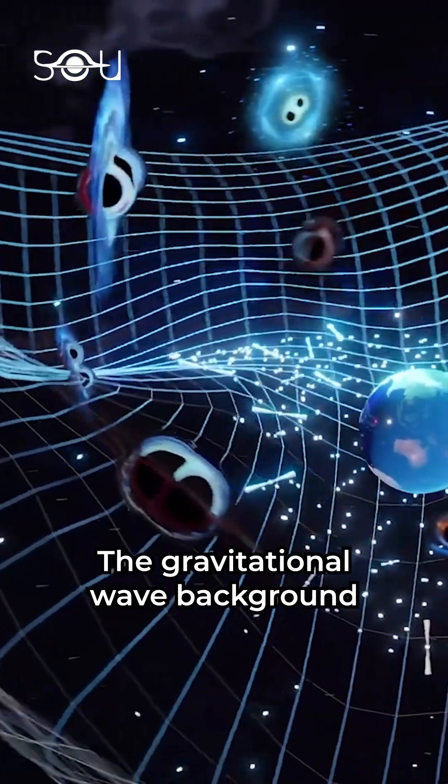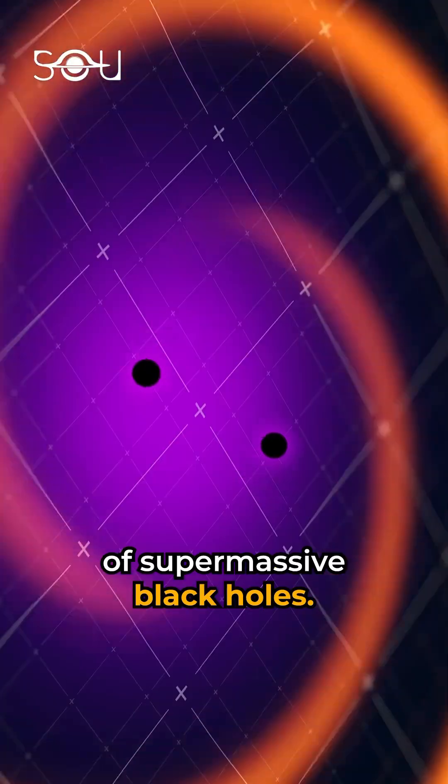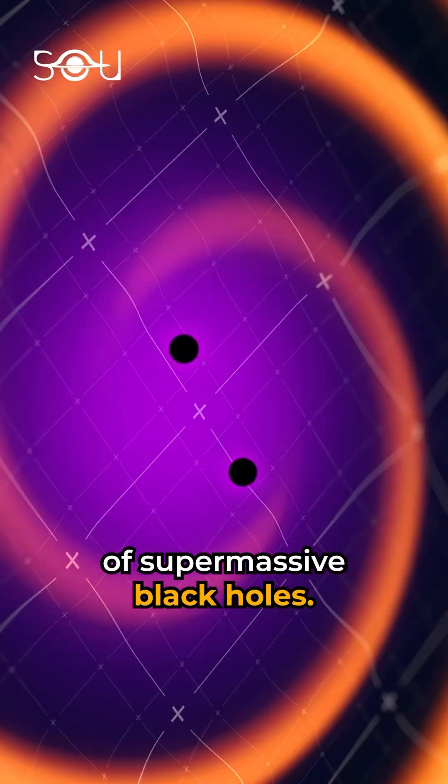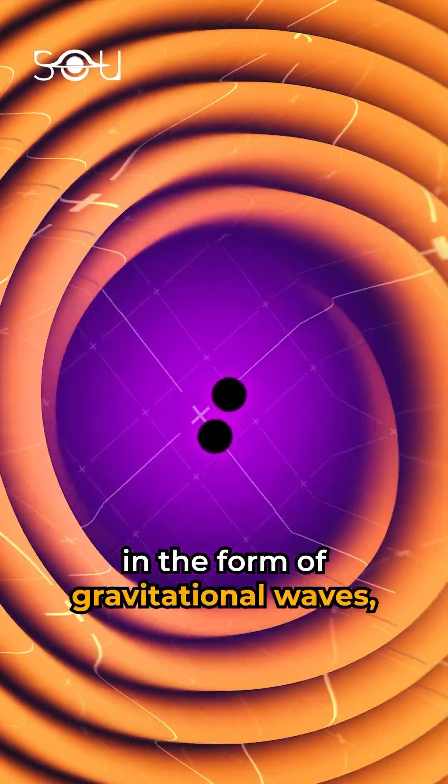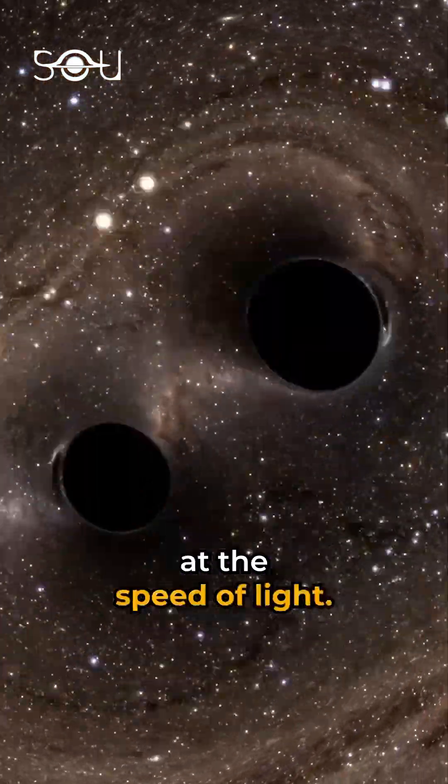The gravitational wave background is thought to be caused by the mergers of supermassive black holes. These mergers release a tremendous amount of energy in the form of gravitational waves, which travel through the universe at the speed of light.